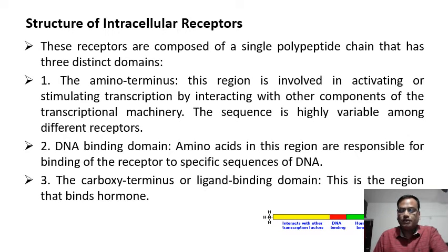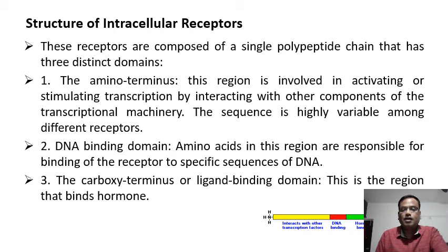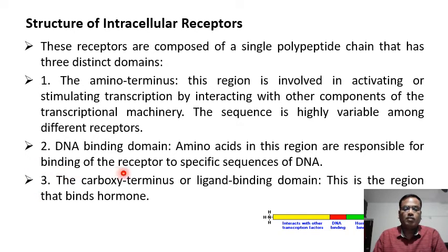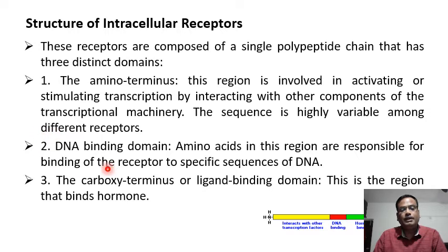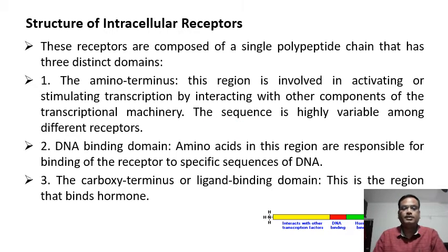Regarding the structure of intracellular receptors: these receptors are composed of a single polypeptide chain that has three distinct domains. First is the carboxyl terminus or ligand binding domain — the most important domain because it binds to the hormone and is specific for that particular hormone. Second is the DNA binding domain, the part of the receptor that binds to the DNA molecule. Third is the amino terminus, which is involved in activating or stimulating transcription by interacting with other components of the transcriptional machinery.